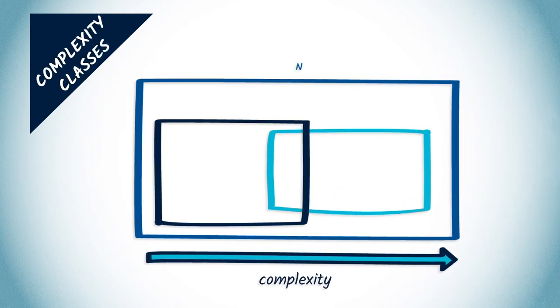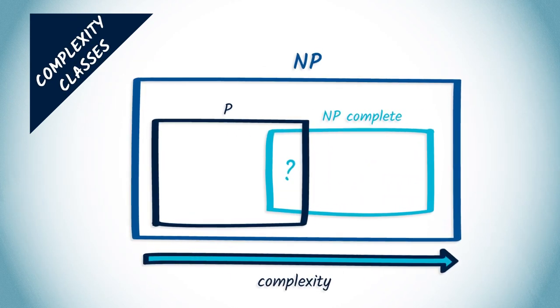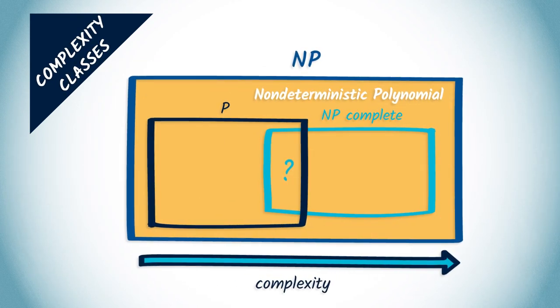For other problems, it's more difficult to determine their complexity class. This is the case for the TSP, for example. No one has managed to find a polynomial algorithm to solve it, and there are strong suspicions that this is just not possible. The TSP, therefore, belongs to a class of more difficult problems called NP problems, for non-deterministic polynomial.